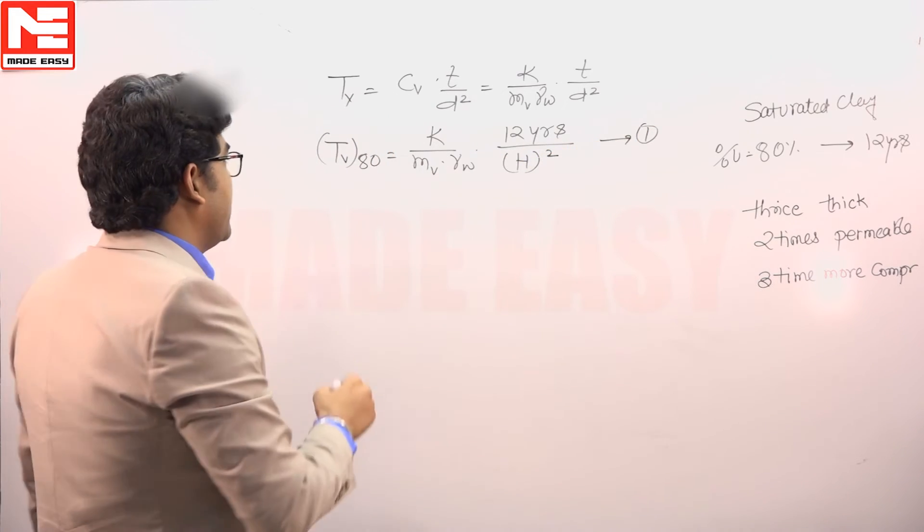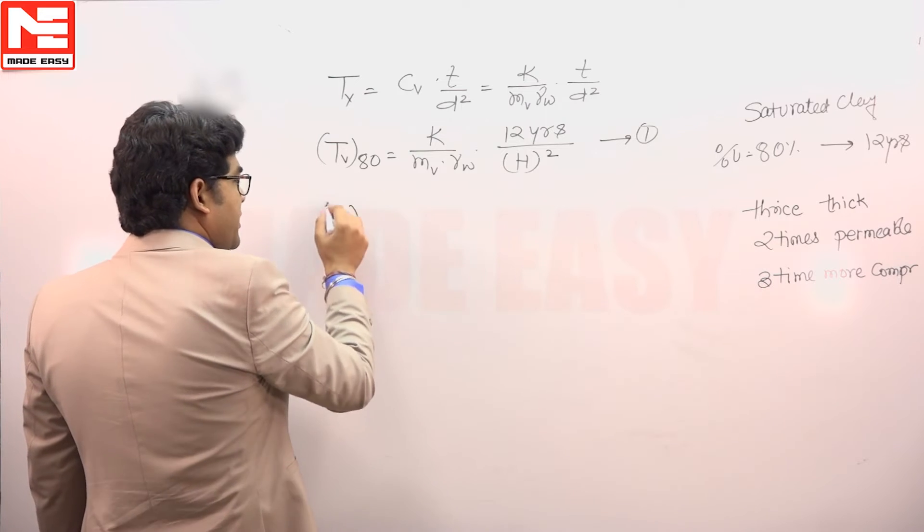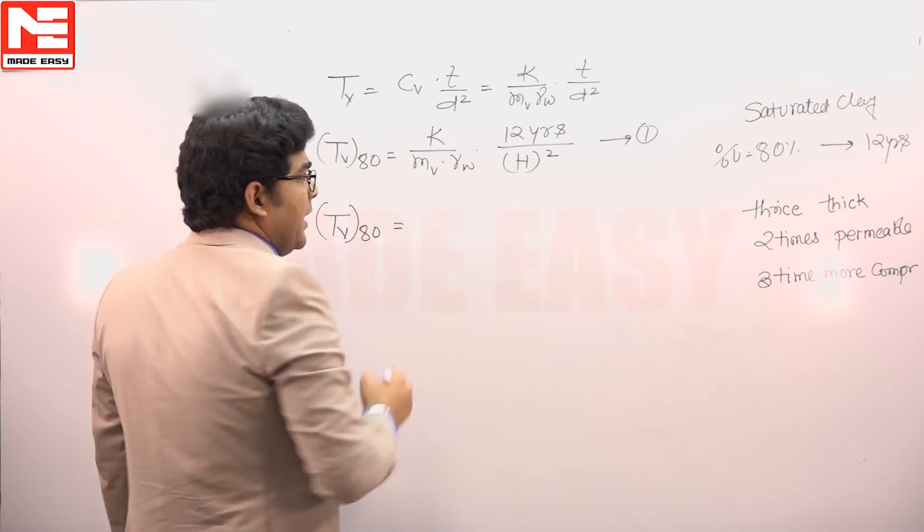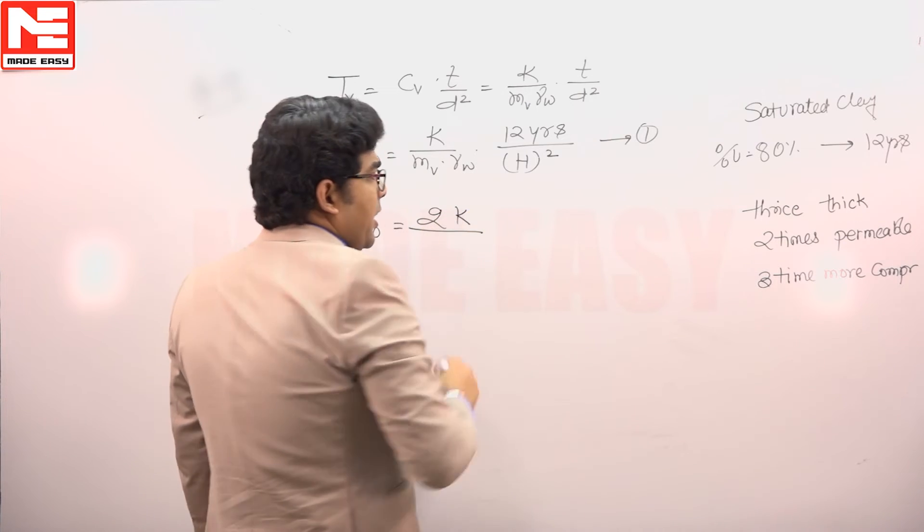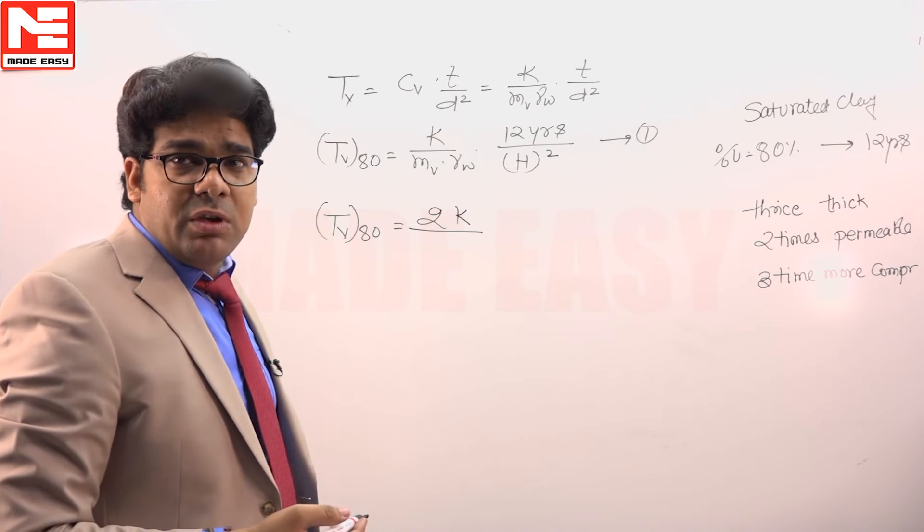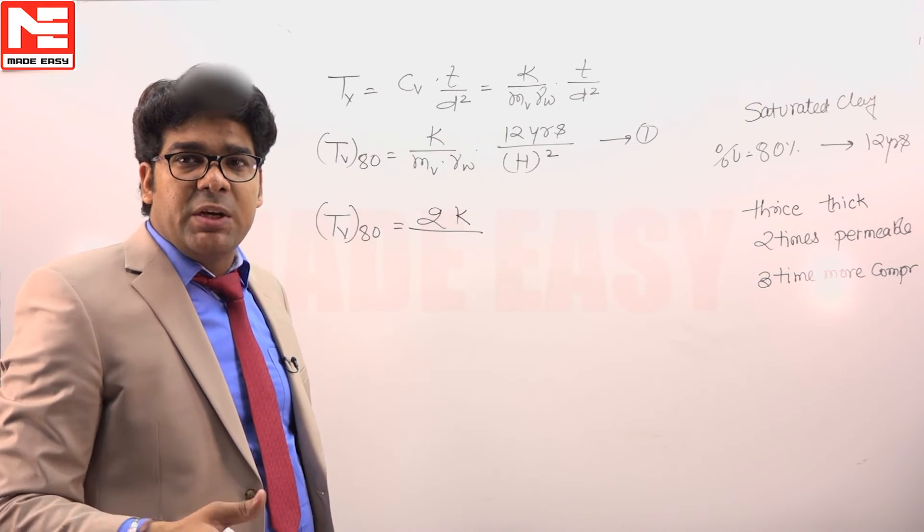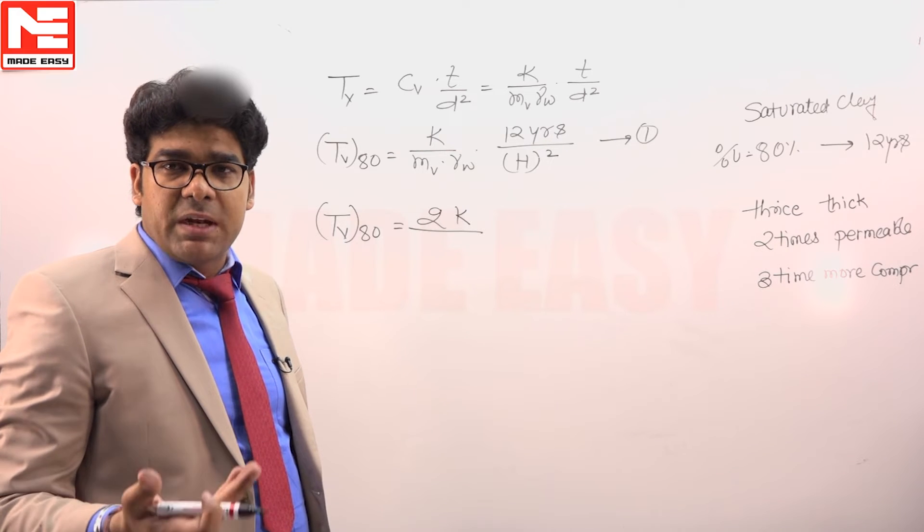In the second condition, when the properties are changed, the degree of consolidation is the same—that is TV 80%. Now the permeability gets doubled, so this will be 2K. Compressibility becomes 3 times, so the coefficient of volume compressibility becomes 3 times, so MV becomes 3 times.